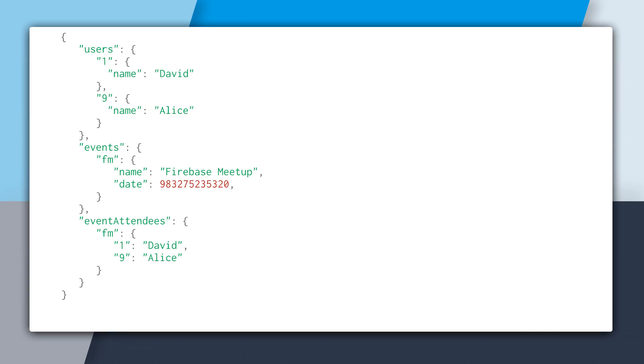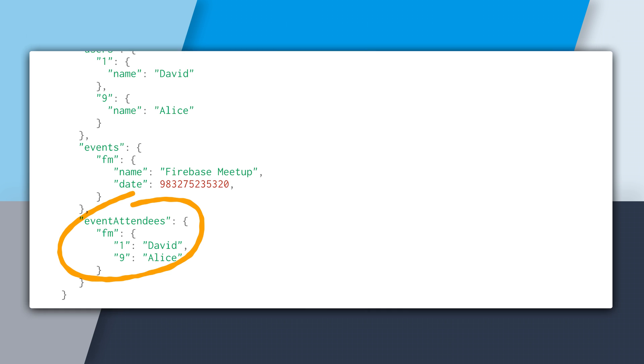Rather than embedding the attendees, we can break them out to their own root key in the database. I've created a new collection called Event Attendees at the root of the database. This collection uses the event ID key and the UID key to represent each user. This makes my data structure flat, which is a good thing, because it means I don't have to download my attendees every single time I download an event. But if I do need my attendees, I can do that because I'm using the same key, which is event ID.